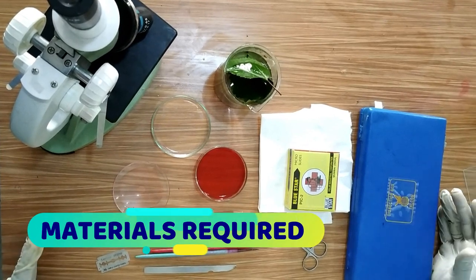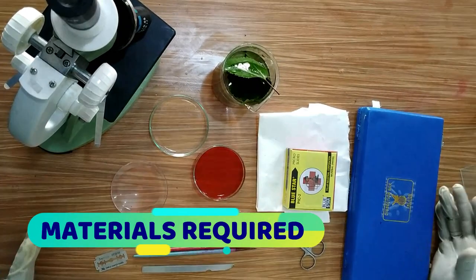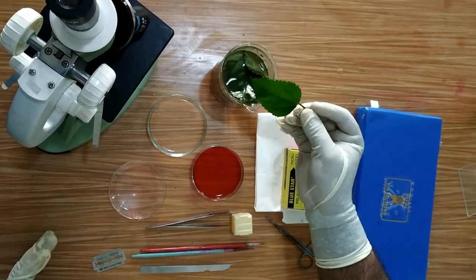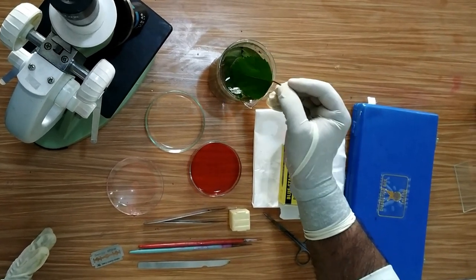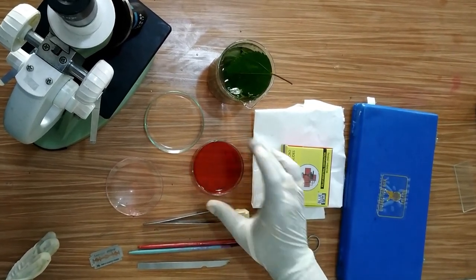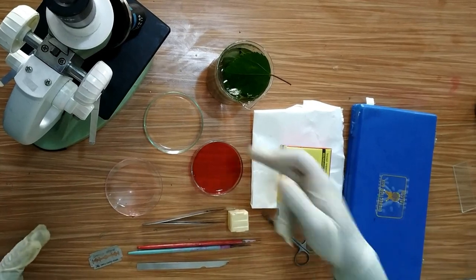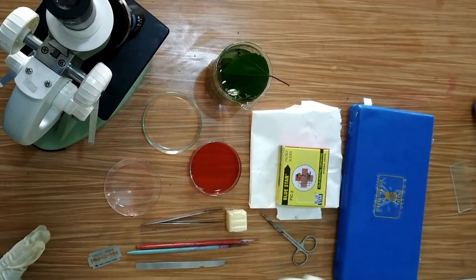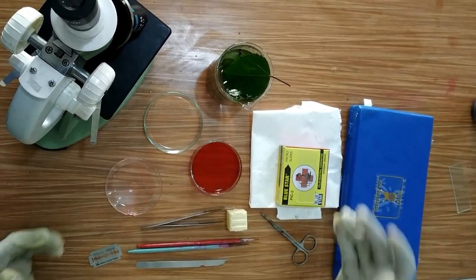To perform this experiment, we require a leaf from where we will collect the epidermal peel containing the stomata, safranin stain to give color to the stomata, water to wash, and glycerin to avoid drying and desiccation of the stomata.